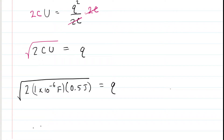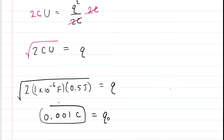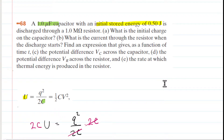Working that out, the initial charge on the capacitor is 0.001 coulombs. We put a subscript 0 to denote the initial charge. That is the correct answer to Part A. Now let's look at Part B.